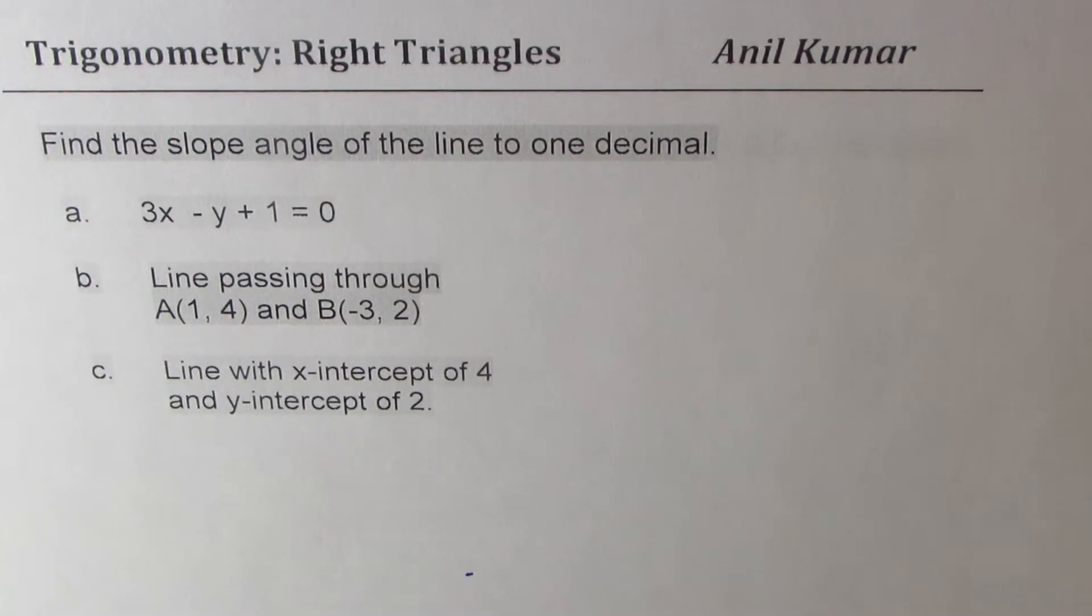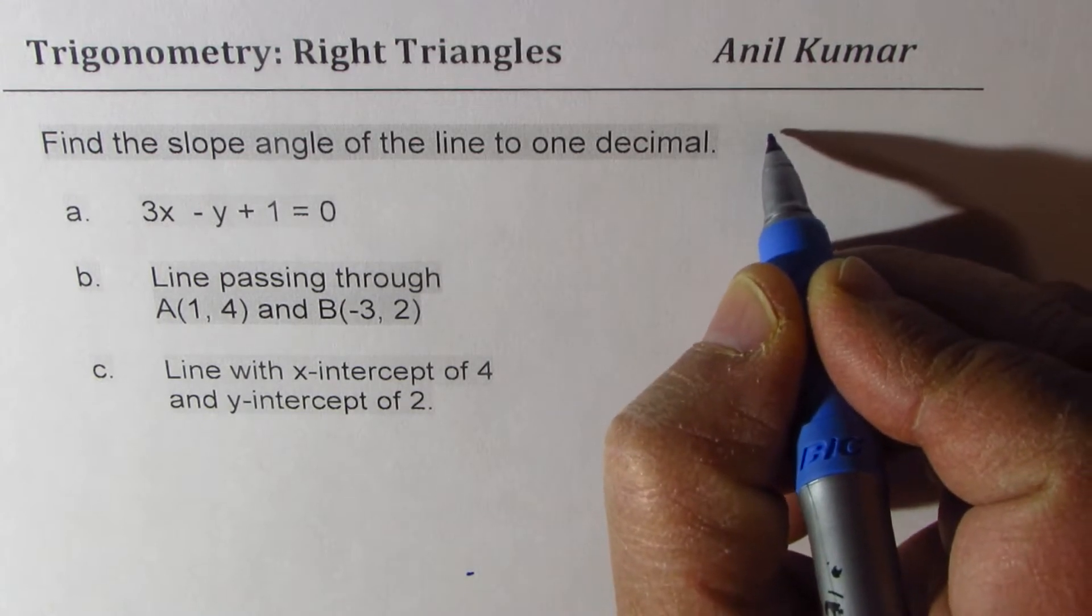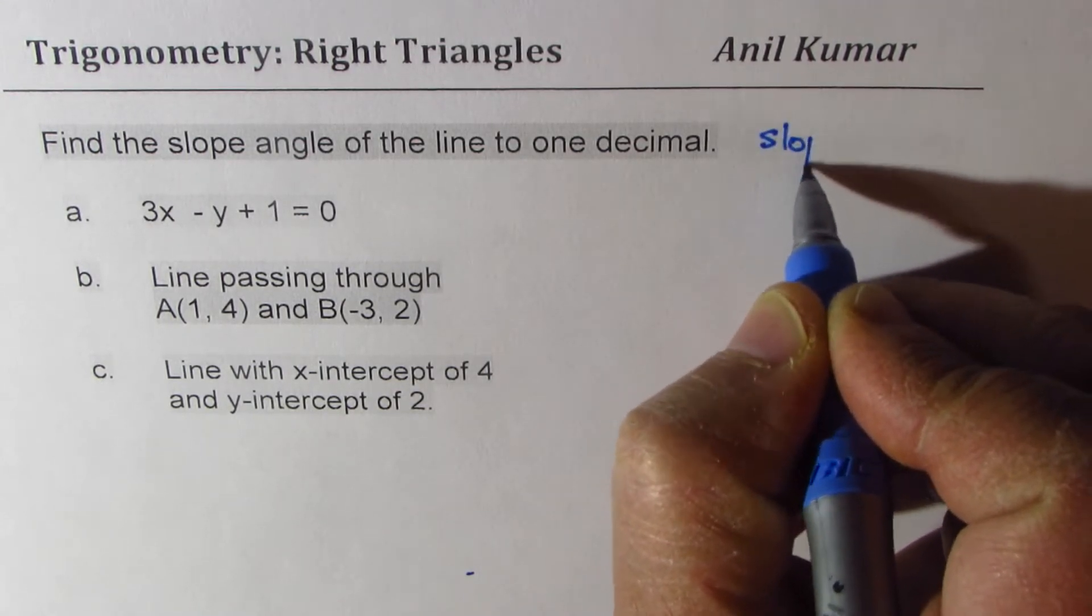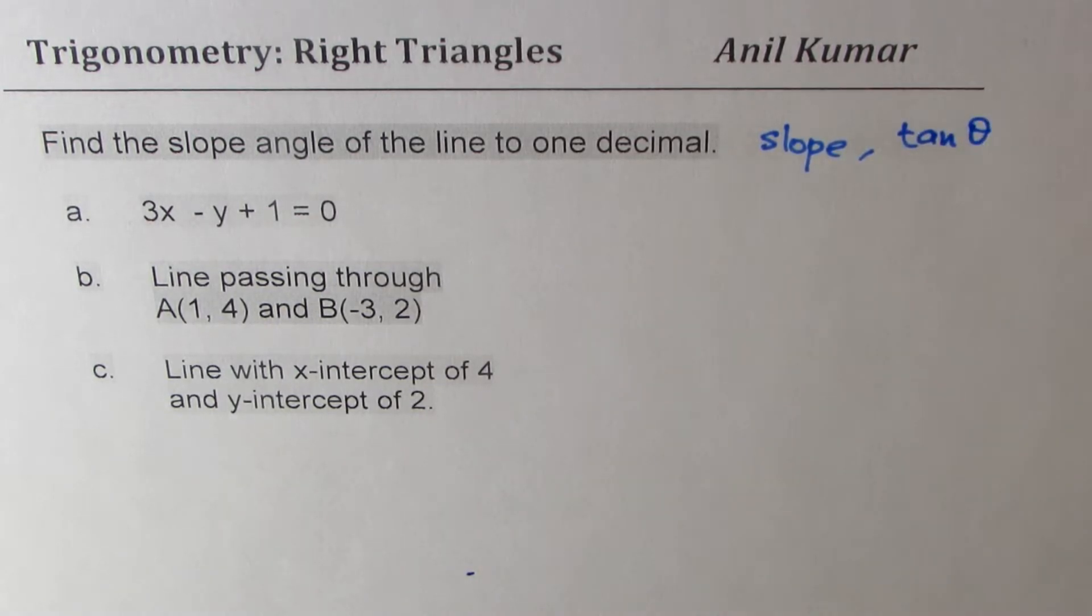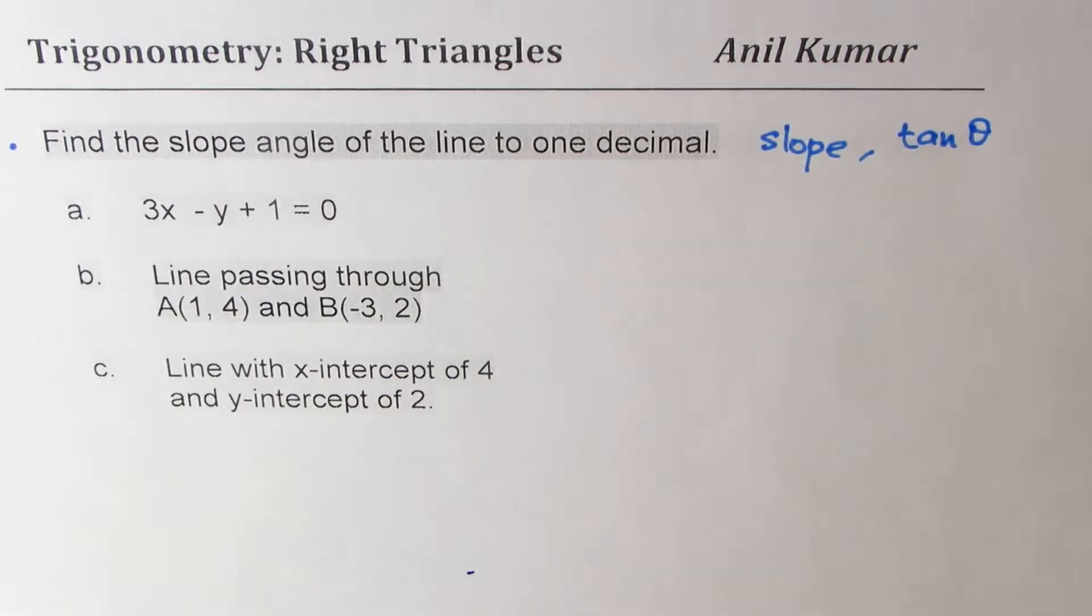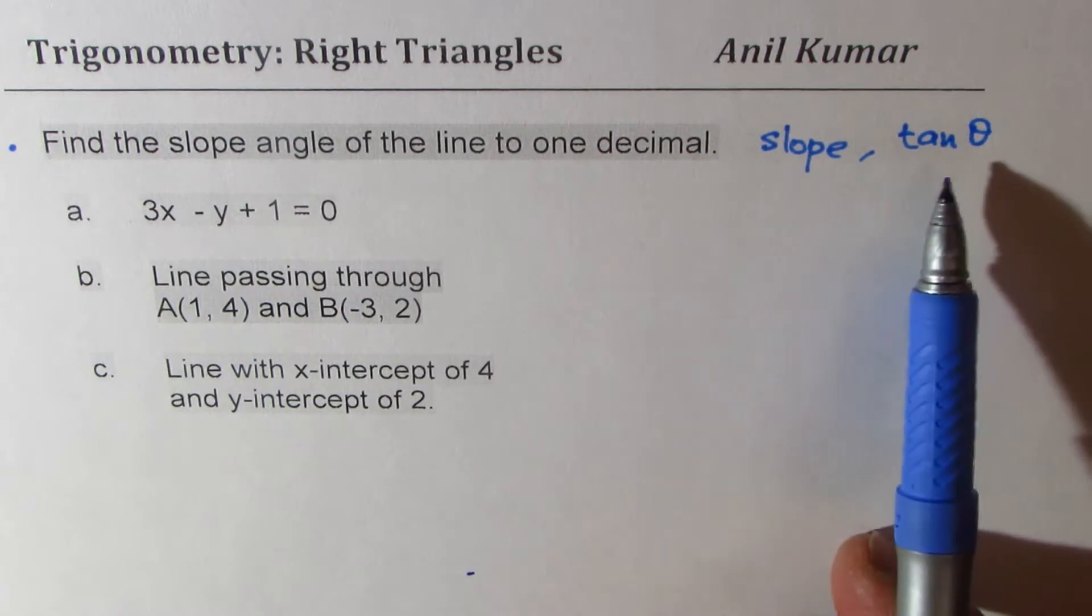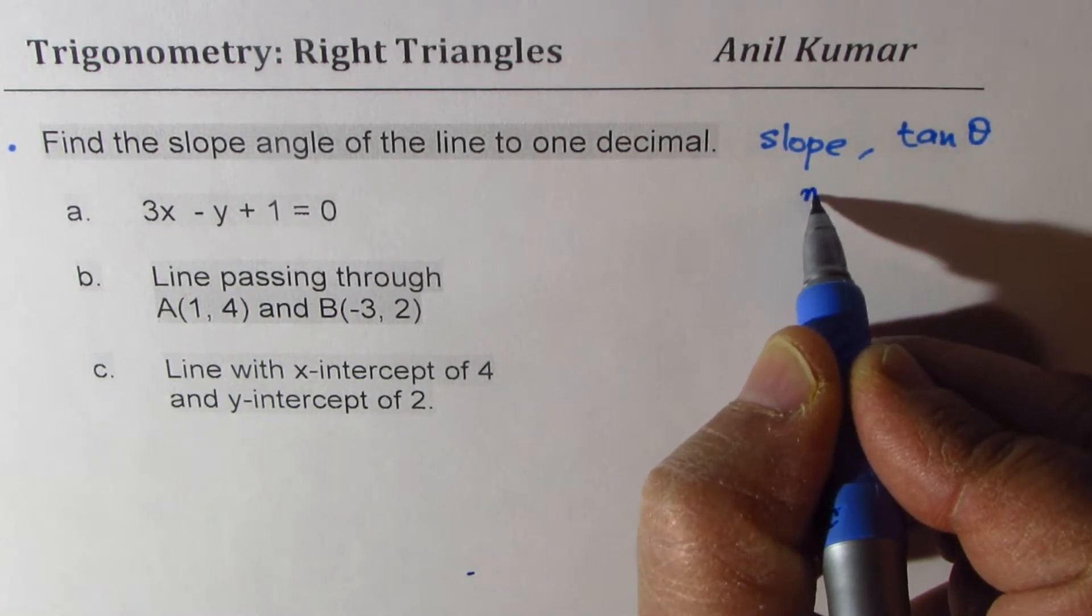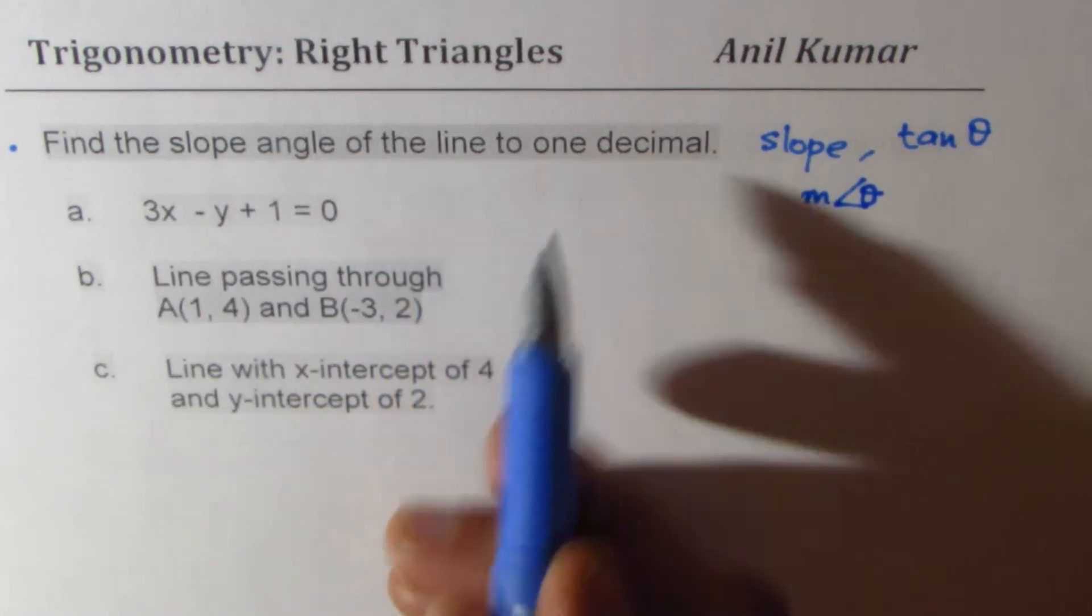I'm Anil Kumar. Welcome to my series on trigonometry. We are discussing right triangles. Here is an example which will help you understand and relate slope with tan of an angle. That is what we are trying to do in this particular example. The question before us is find the slope angle, which means we need to find the measurement of angle theta of the line to one decimal place.